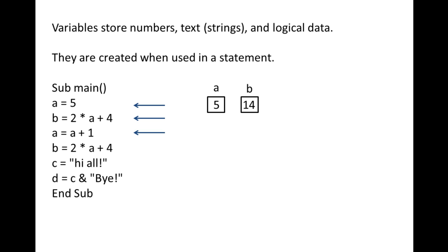The third statement is a equals a plus 1. This is nonsense algebraically, but it is very common to see statements like this in computer programming. The right side is evaluated first, and then the resulting value is assigned to the variable on the left side. a plus 1 is 6, and this value is assigned to a. The previous value of a is overwritten and gone forever. The fourth statement is b equals 2 times a plus 4. 2 times the current value of a, which is now 6, plus 4 gives 16, and this value is stored in b. The previous value stored in b, which was 14, is overwritten and gone forever.